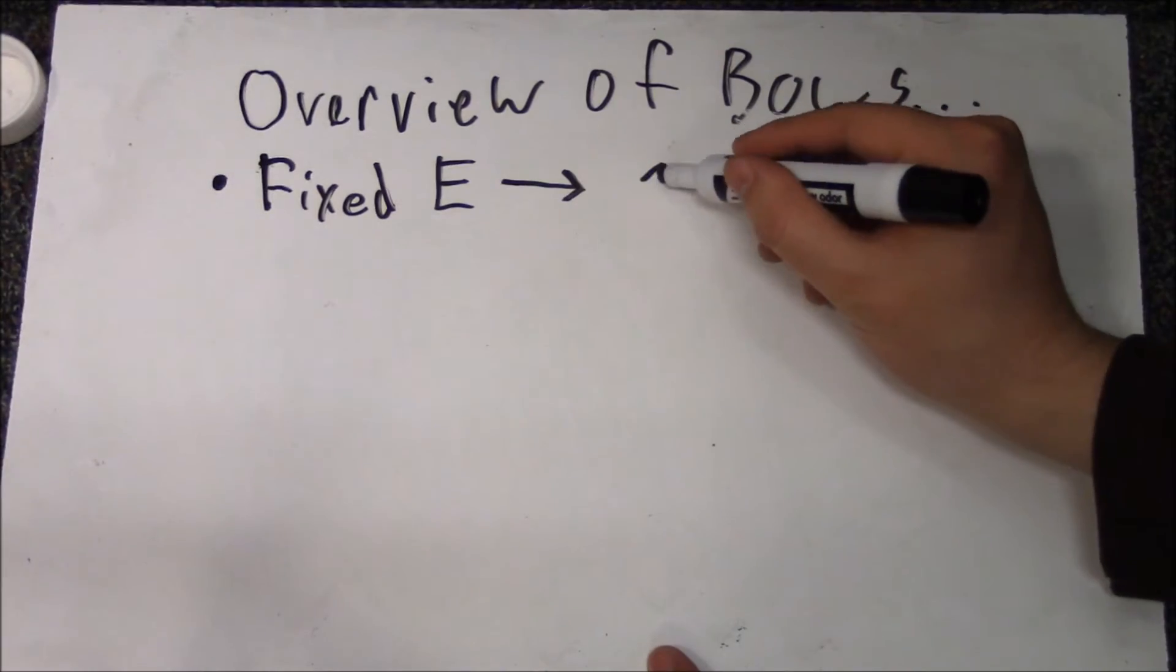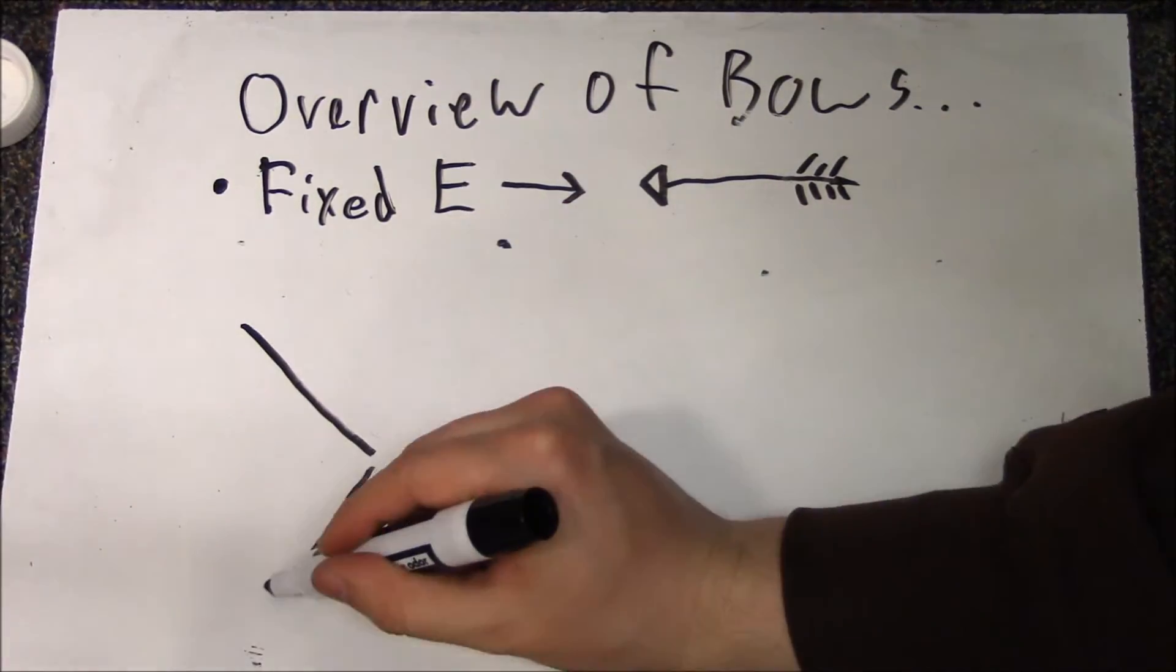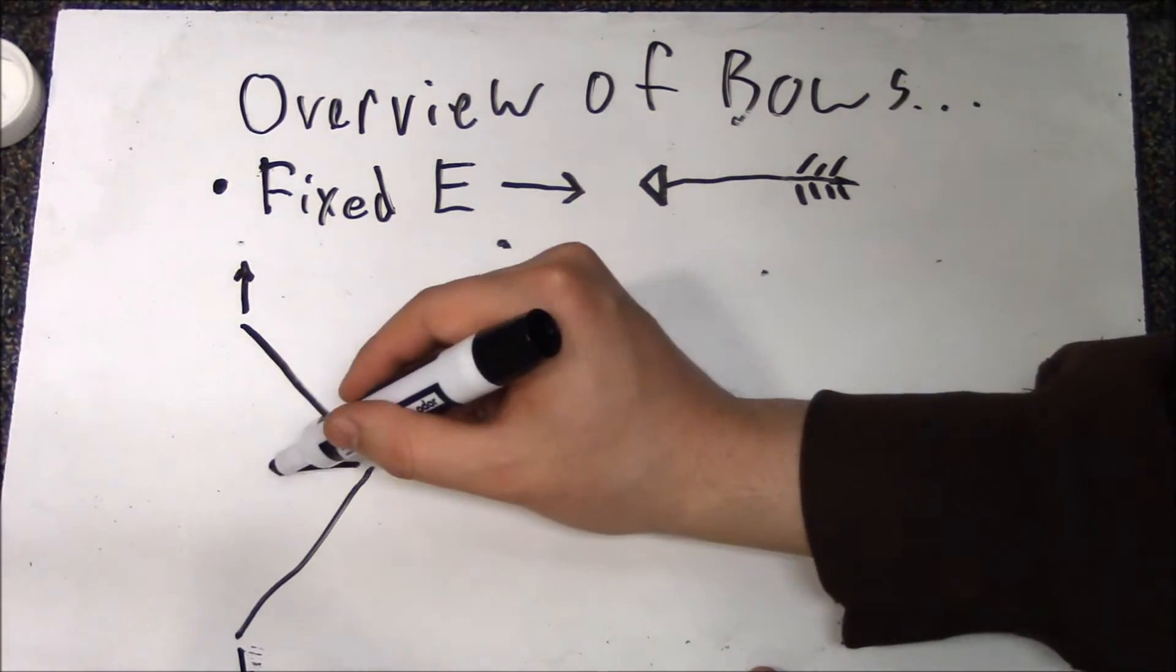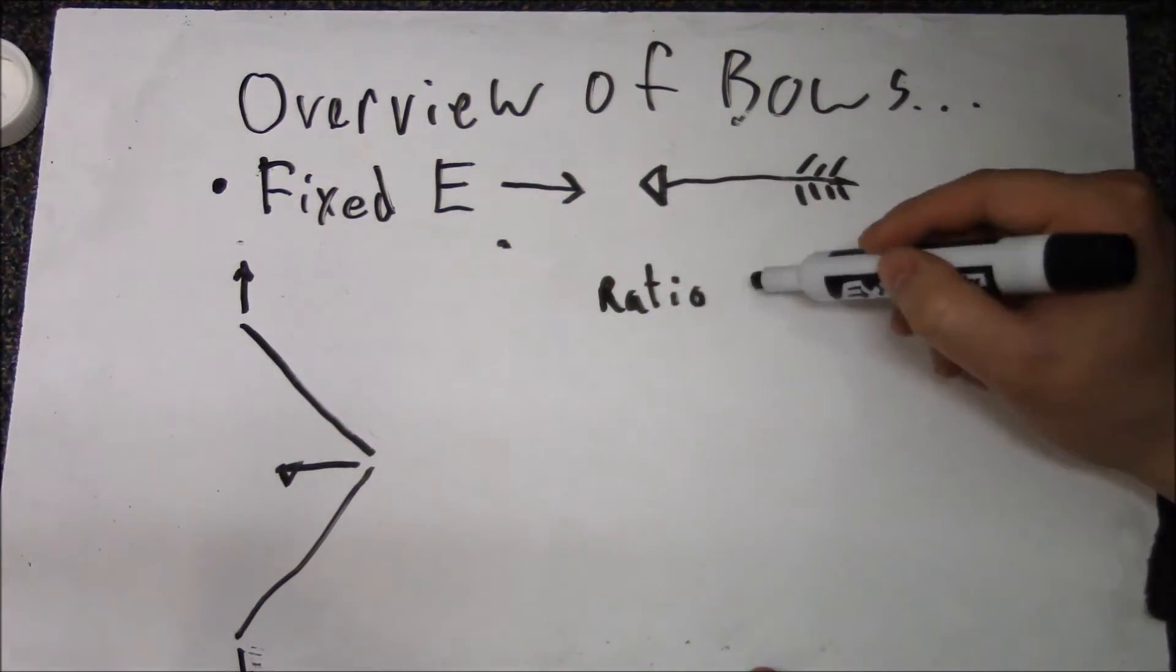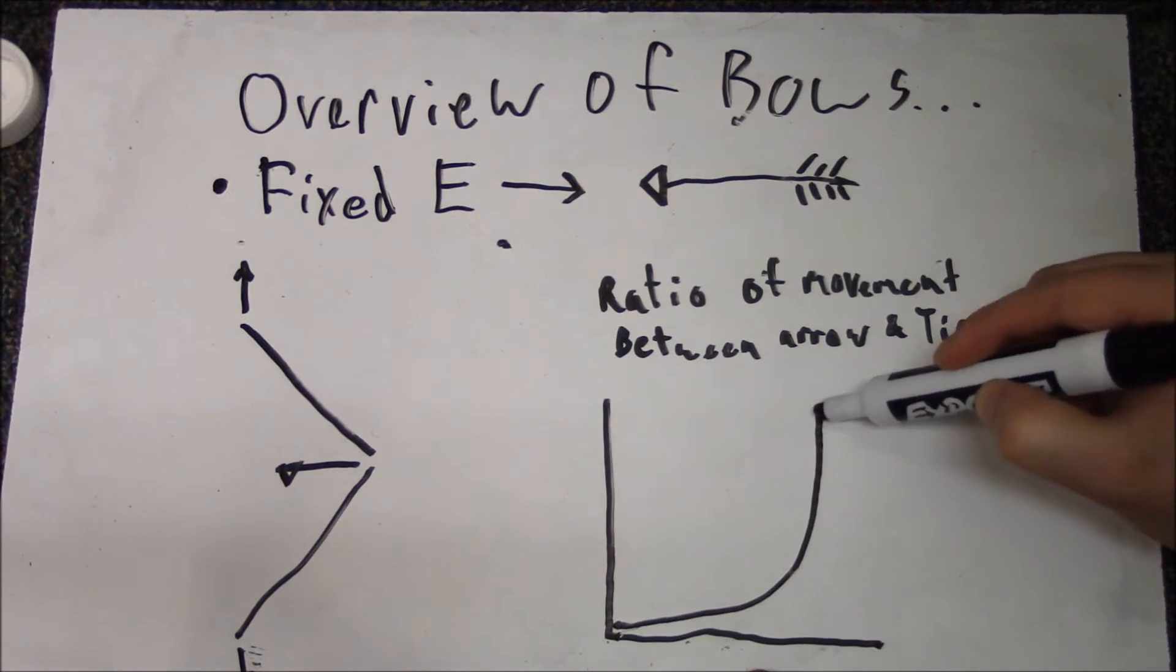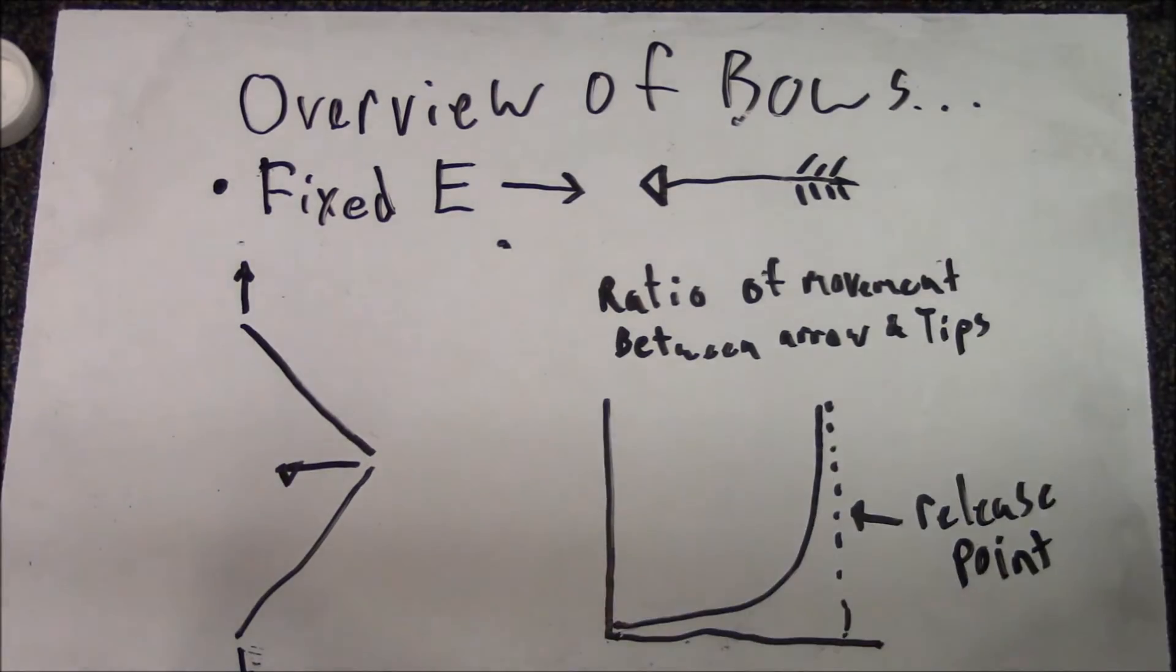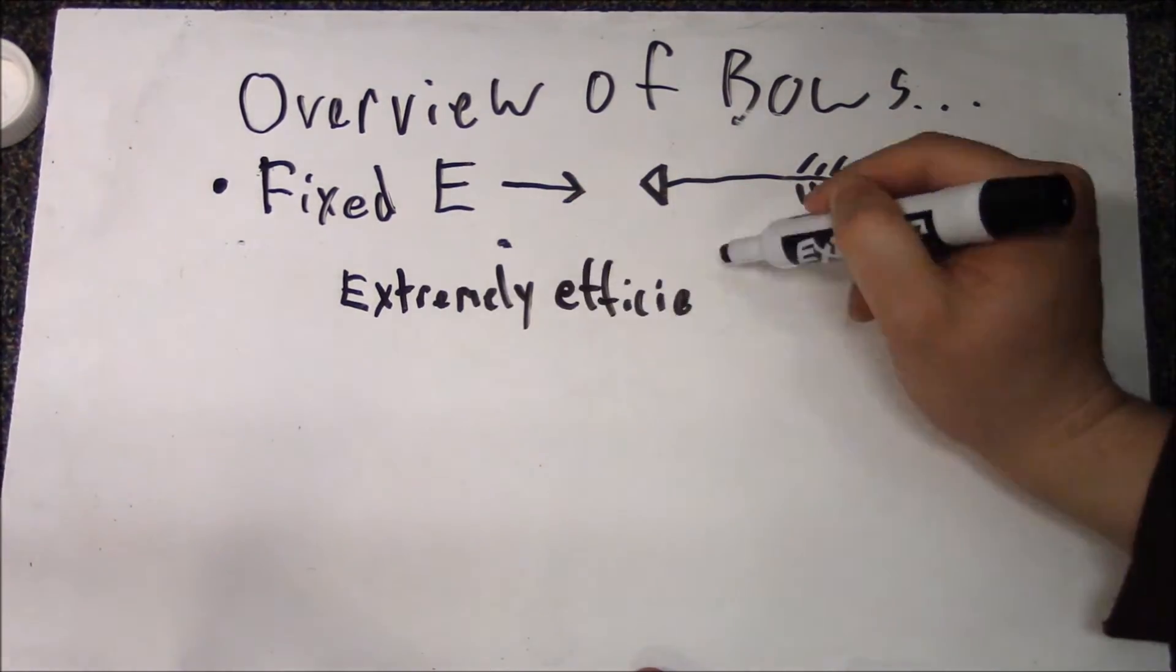After we store the energy in the bow, we transfer that energy to the arrow. This is done by pulling the ends of the bowstring apart to move the arrow forward. The ratio of arrow movement to bow tip movement spikes at release, resulting in most of the energy being transferred to the arrow. In other words, this is a very efficient transfer of energy.